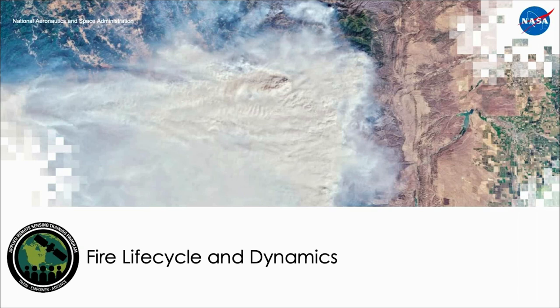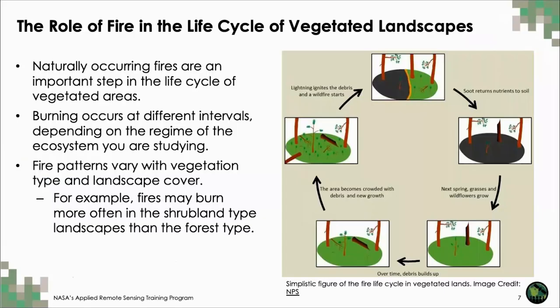Let's start off with some information about landscape fire dynamics. Fires play an important role within vegetated landscapes. Burning can clear dead biomass like leaf litter and debris, improve nutrient availability within soil, and open up the canopy, allowing more sunlight to reach the forest floor, which stimulates new growth. We've provided a simple infographic of this from the National Park Service.